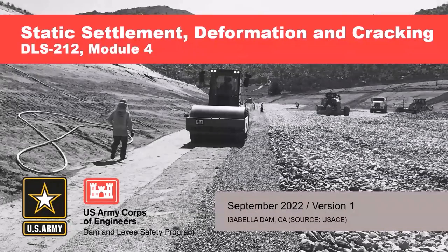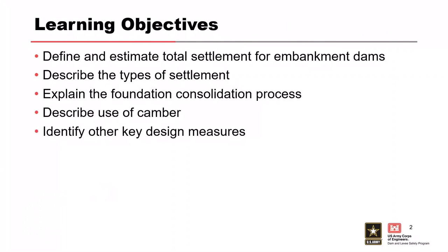We'll go ahead and get started with module four. This module, we're going to talk about static settlement, deformation, and cracking. The objectives are to define and estimate total settlement for embankment dams, look at different types of settlement, go through the foundation consolidation process, and describe how to define what camber you put on your dam. Camber is where you overbuild the embankment by a few feet — whatever you think your settlement will be — so that when it does settle, you maintain your dam crest elevation. Then we'll look at a couple other design measures you can use.